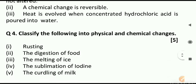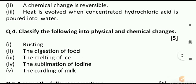Next we have question number four, classify the following into physical and chemical change. It is of five marks and you have to tell whether the given change is physical or chemical. First part is rusting. Second, the digestion of food.